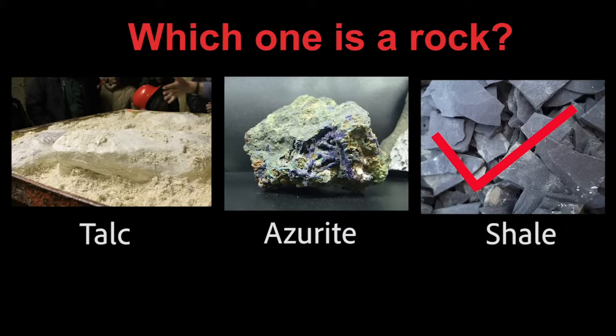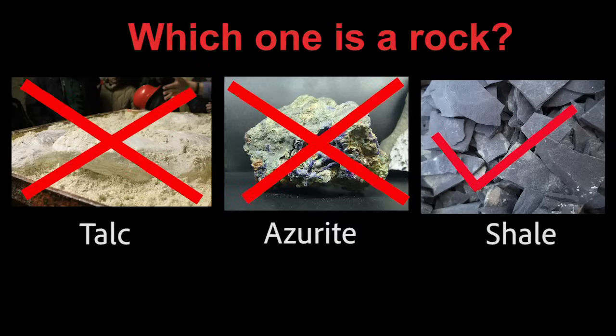If you chose azurite or talc, sorry. Azurite and talc are minerals. Shale is a rock. Understanding this difference allows us to better understand what a rock is and if glacier ice is a rock.